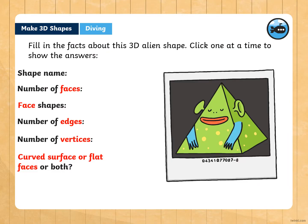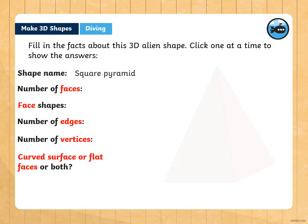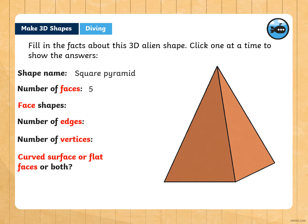The first thing we need to do is to fill in the facts about the 3D alien shape. Click one at a time to show the answers. The shape name is a square pyramid and the number of faces is 5. The face shapes are 1 square and 4 triangles. And the number of edges, we have 8. And the number of vertices, we have 5. Curved surface or flat faces or both? It is only flat faces because we only have triangles and square.